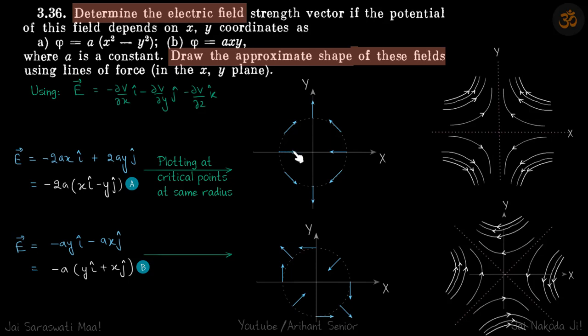So ideally, these arrows should be twice the length of these arrows, but anyway, it's just symbolic. So at critical points, we'll find the electric field again.